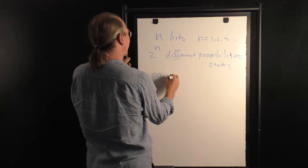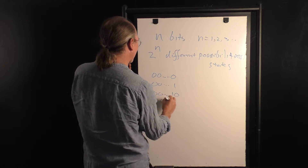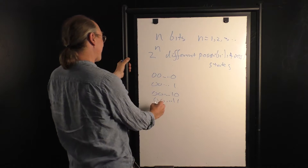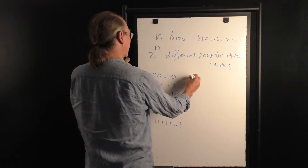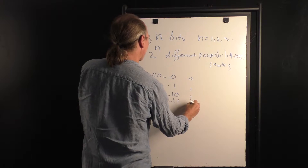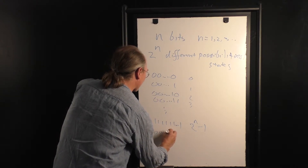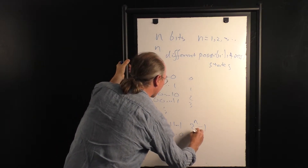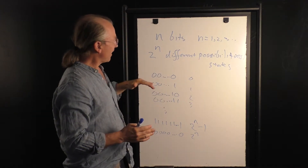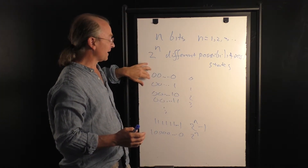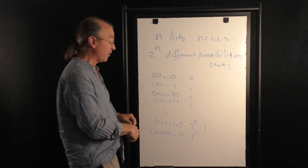So I can have 0, 0, ..., 0; then 0, 0, ..., 1; then 0, 0, ..., 1, 0; and so on — you can tell there are a heck of a lot of possibilities here — all the way up to 1, 1, 1, ..., 1. This is 0, this is 1, this is 2, this is 3, and this is 2 to the n minus 1, because 2 to the n would be 1, 0, 0, ..., 0 — a huge number of possible things that you could label with these bits.